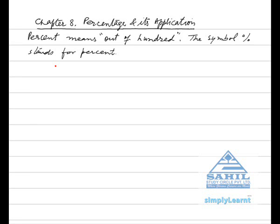Chapter 8: Percentage and its Application. Percent means out of 100. The symbol percent stands for percent. Per means 1 and cent means 100, that is out of every 100. For example, 55% means 55 out of every 100.